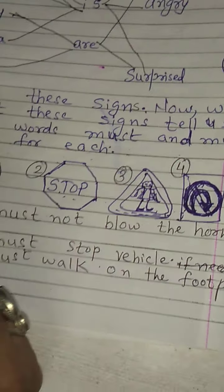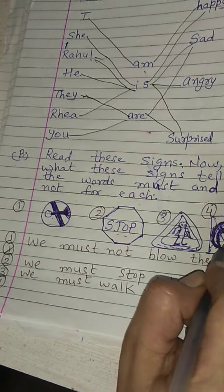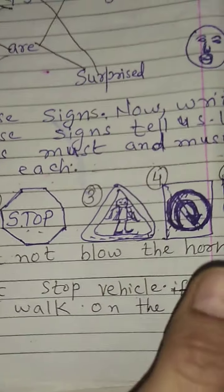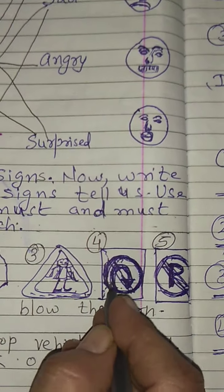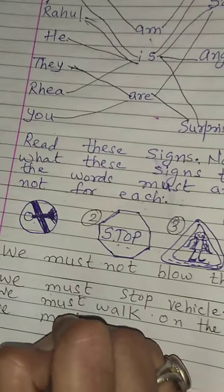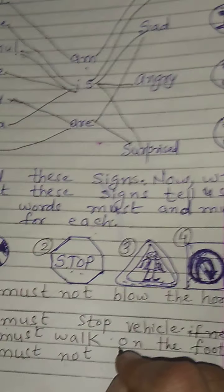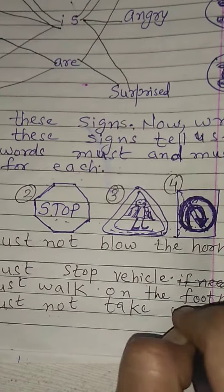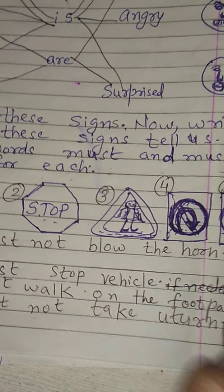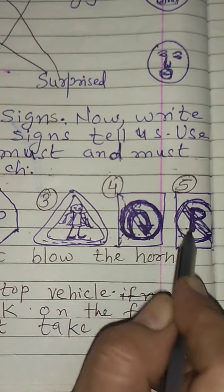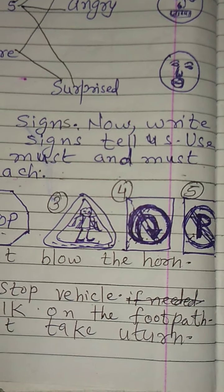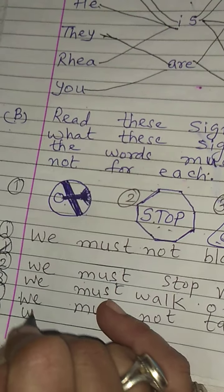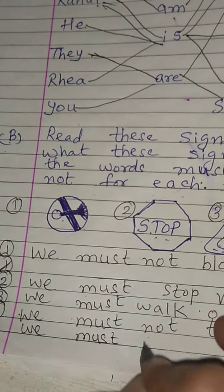The fourth sign is for U-turn — ये sign क्या बताता है: we must not take a U-turn. The fifth sign is for parking — 'no parking' means we must not park here.